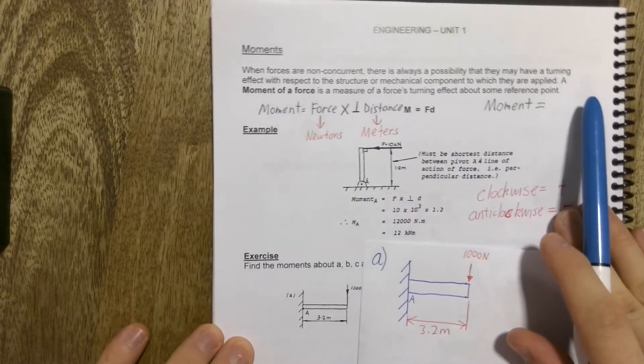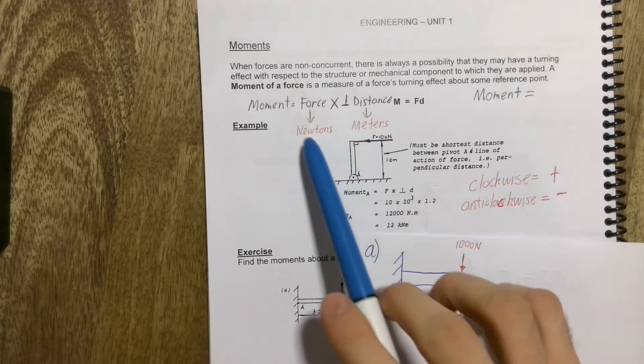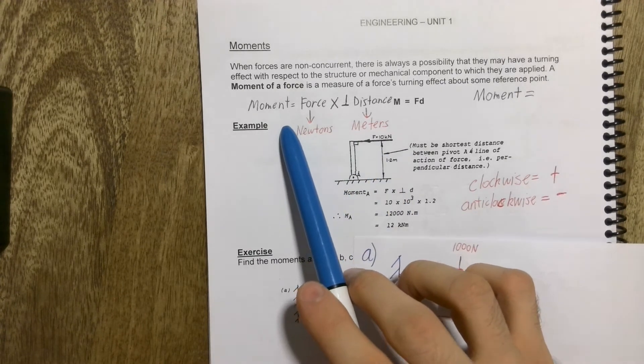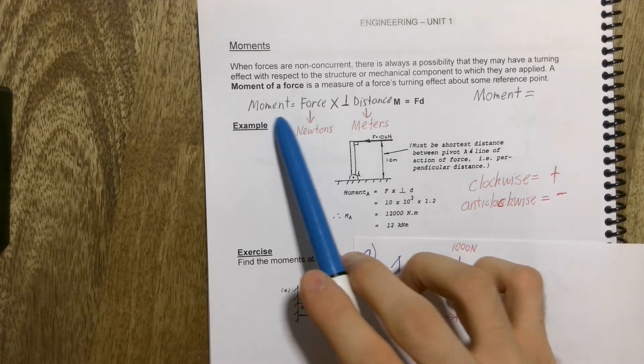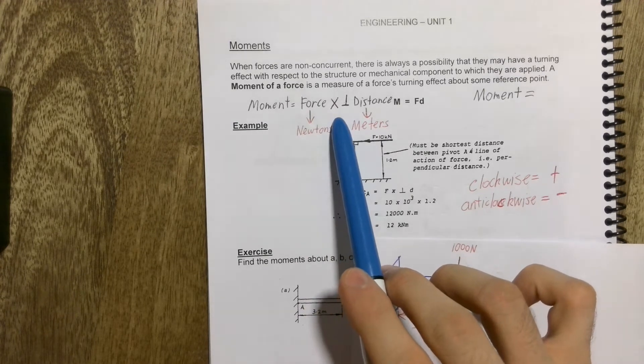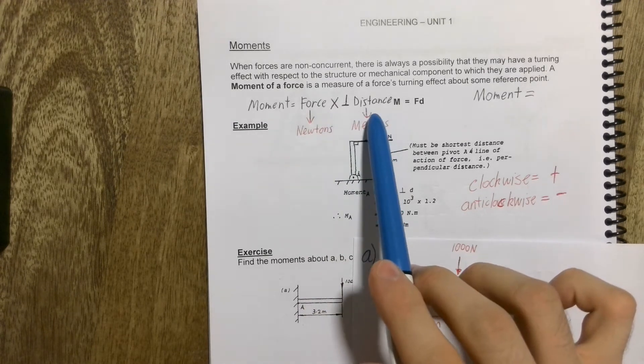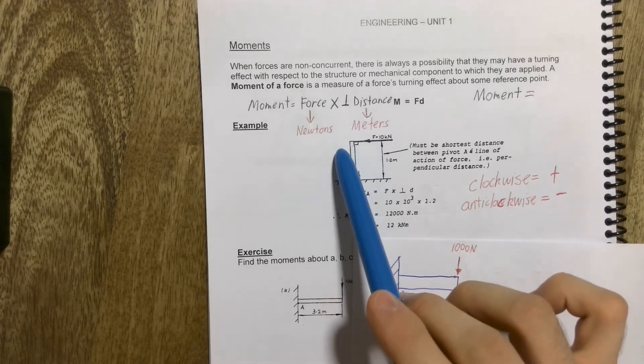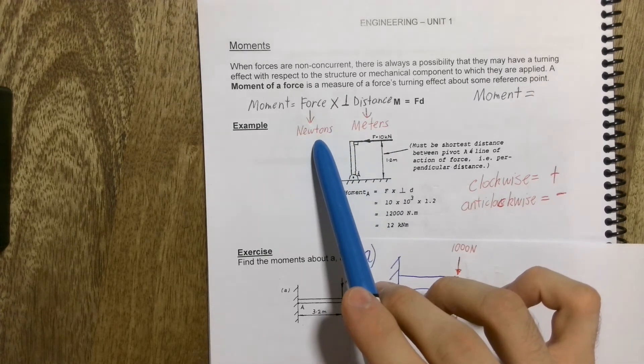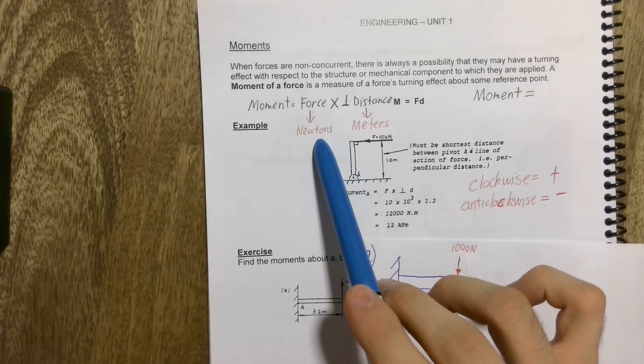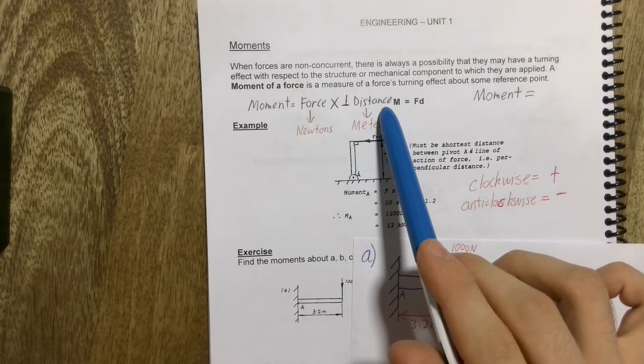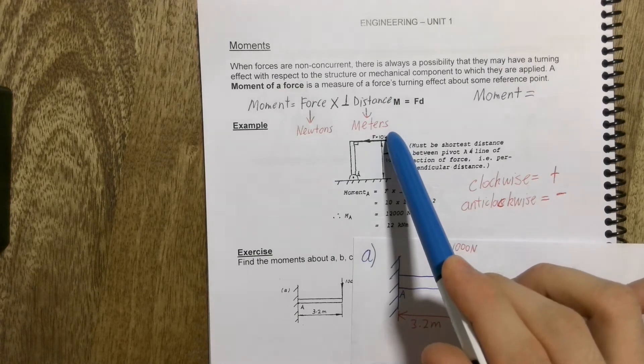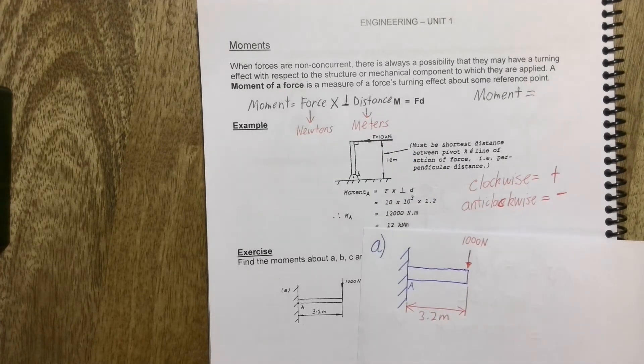Before we actually have a go at the problem, it's very important to remember our formula. So our formula is moments equals force multiplied by perpendicular distance. And that's the symbol for perpendicular. Now, when we talk about force, we want to try and convert our forces to newtons. When we think about distance, we want to convert them to metres. Okay, let's have a little go.